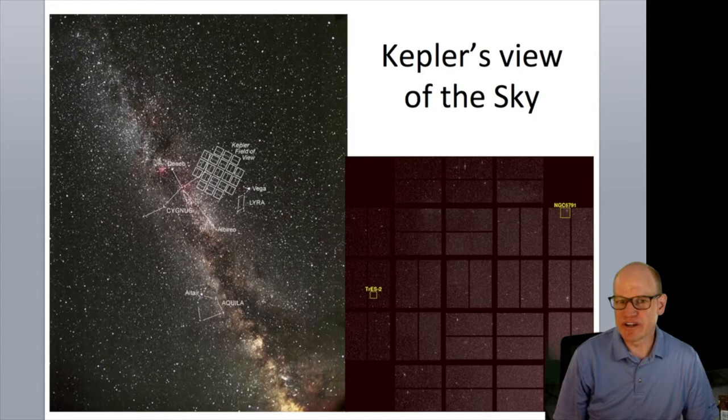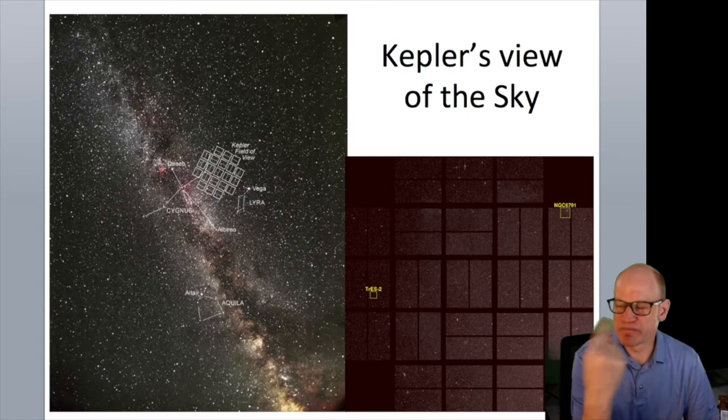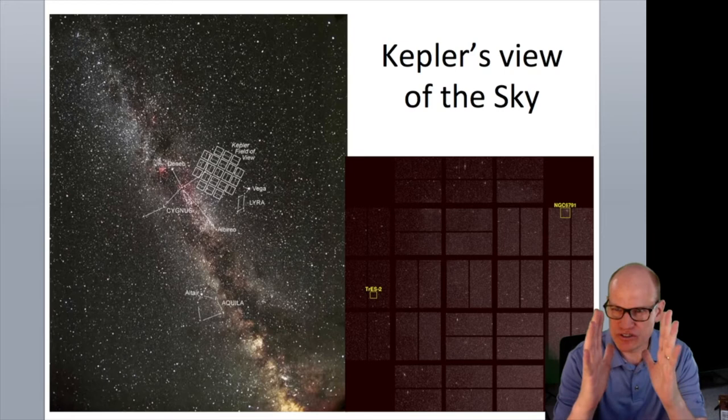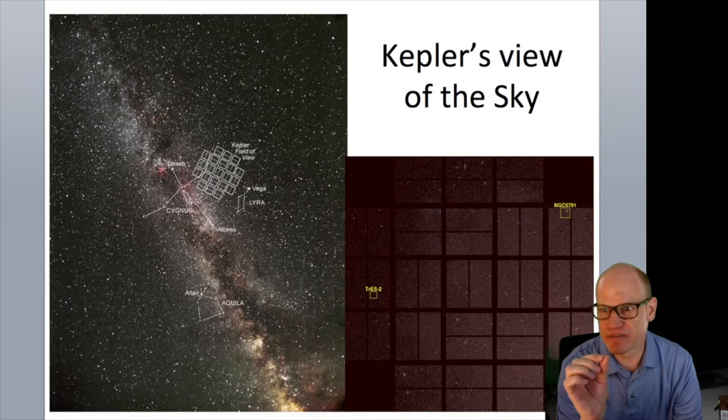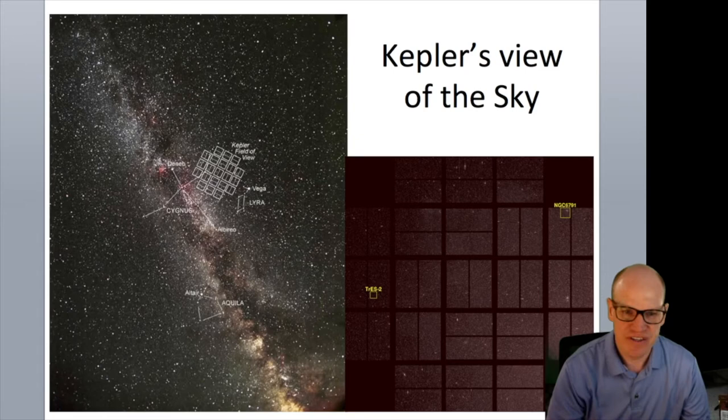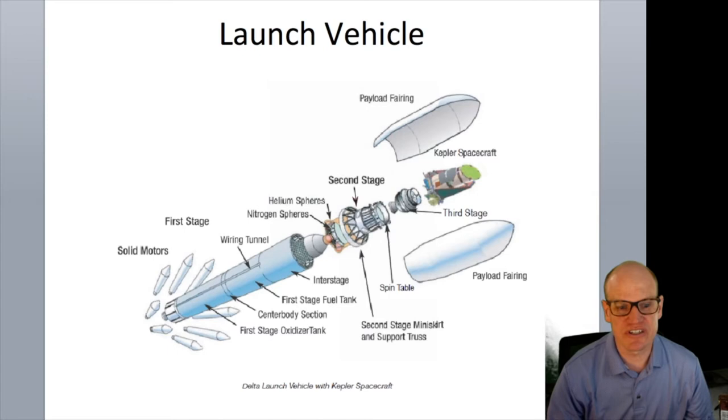Extending the filter into the infrared would cause problems, because planets can glow fairly brightly in the infrared. That extra infrared light wouldn't be subtracted when the planet transits, corrupting the measurement. So the filter was restricted to visible wavelengths where the planet contributes negligible light compared to the star.